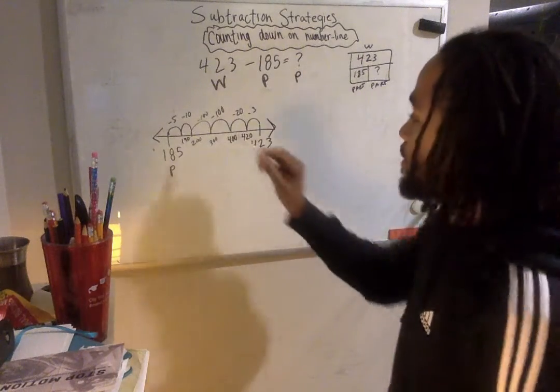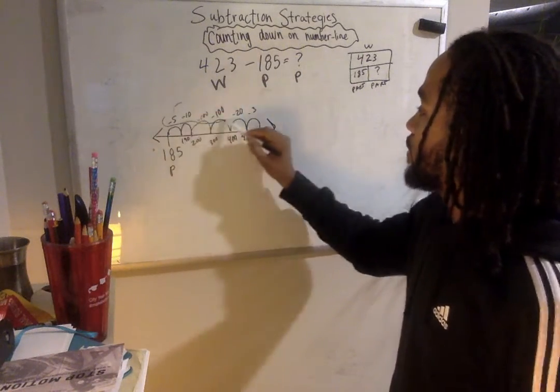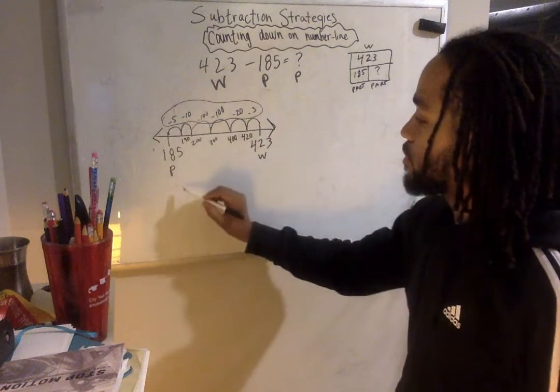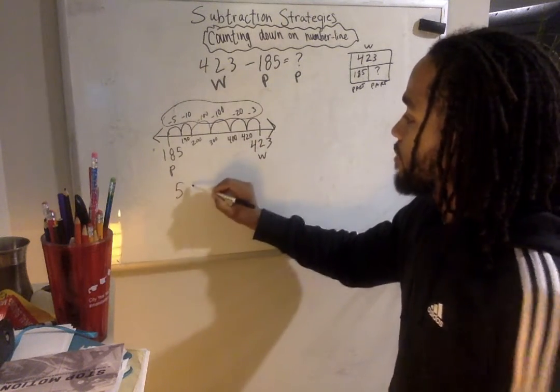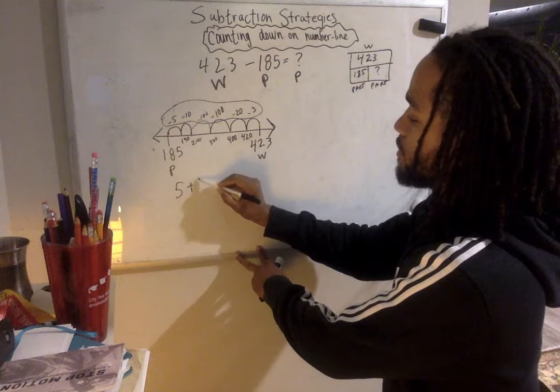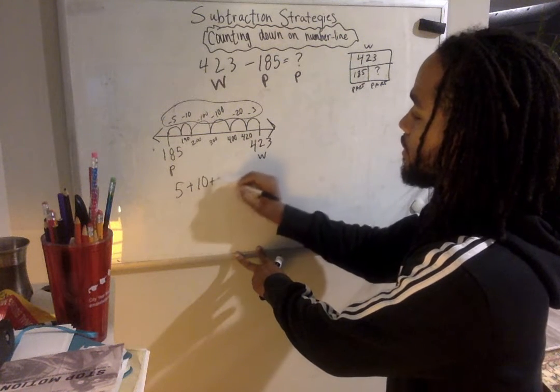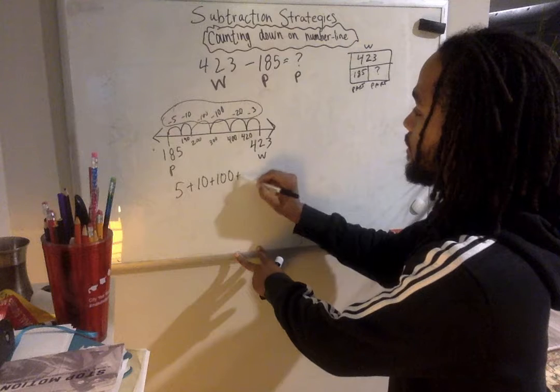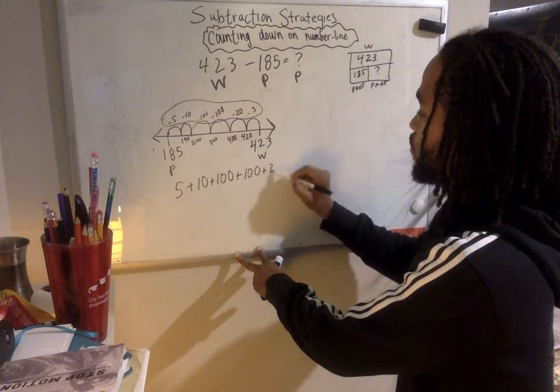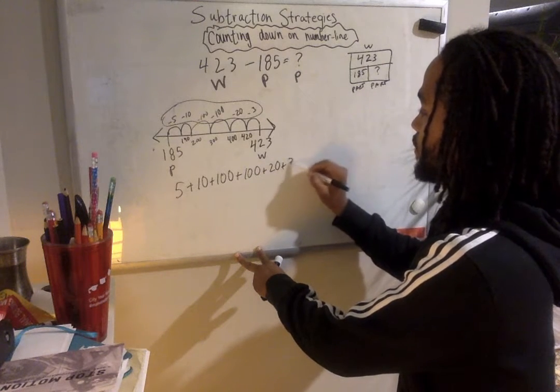My last step is just to combine all of these things together so I can find what that missing part is. So I have a 5 plus 10 and 100 and a 100 and a 20 and a 3.